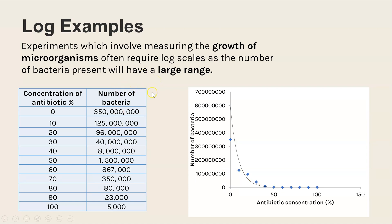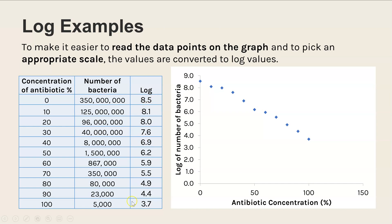So that is the issue that log overcomes. If we convert that number of bacteria column into log and then instead have our y-axis as log of the number of bacteria, now we can get a scale that is far more appropriate. It means that when we plot our data it's really easy to accurately read off the graph different data points. So that's why we use log.